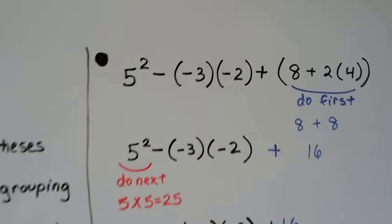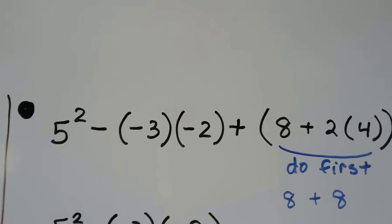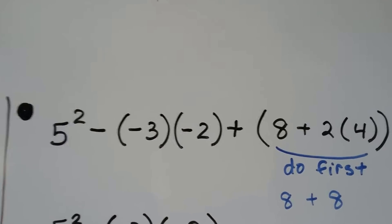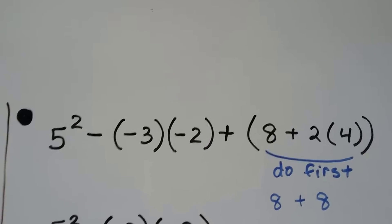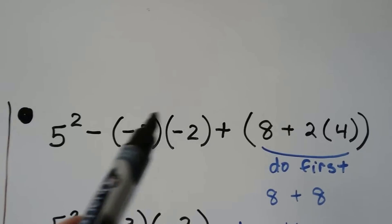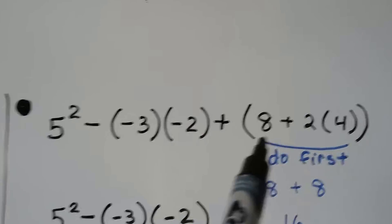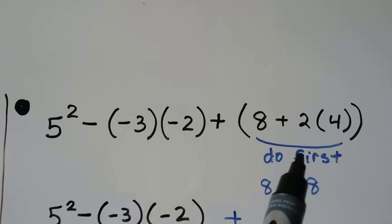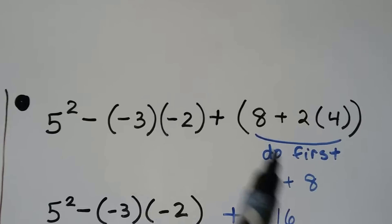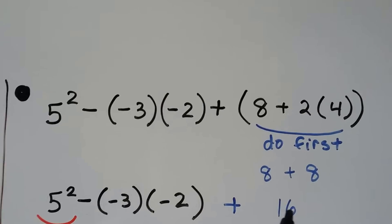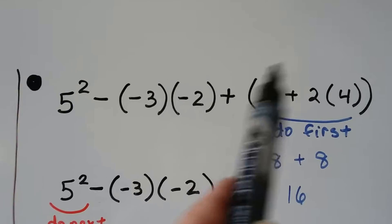We've got this long algebraic expression. We're going to do the expression within the grouping symbols first. Even though these are in parentheses, we have an actual expression inside of them. So we do this first — the multiplication: 2 times 4 is 8. We add the 8 and get plus 16. This whole thing becomes plus 16.